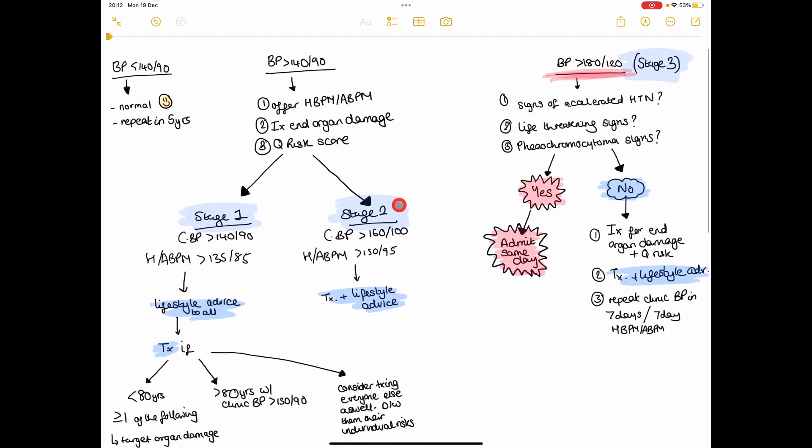So these are our stage one hypertensive patients. Next is patients whose clinic blood pressure has come back as more than 160 over 100. You send them off to have some home or ambulatory blood pressure monitoring. It comes back as still more than 150 over 95.